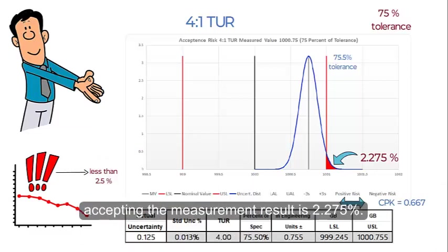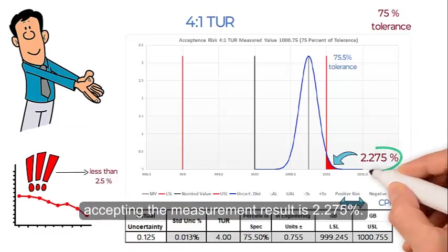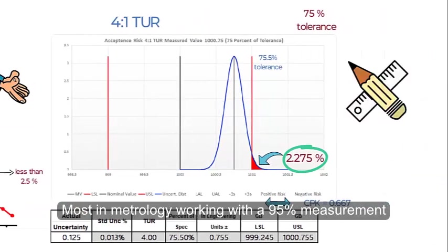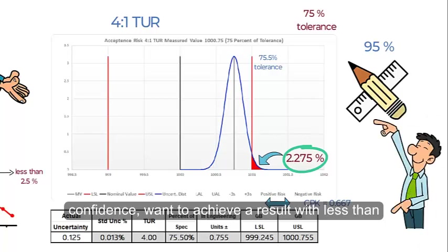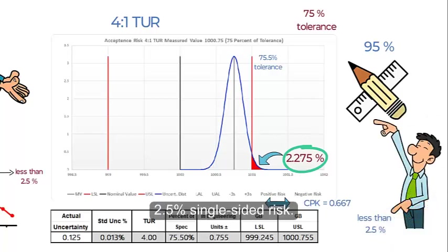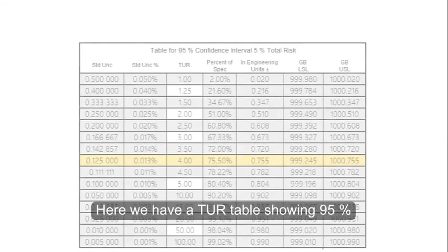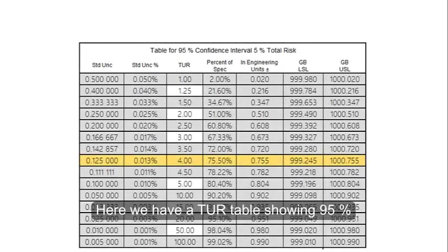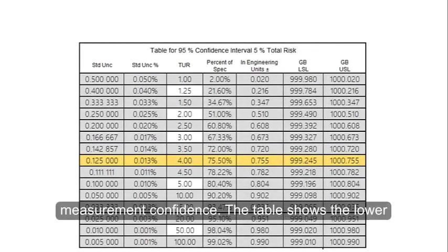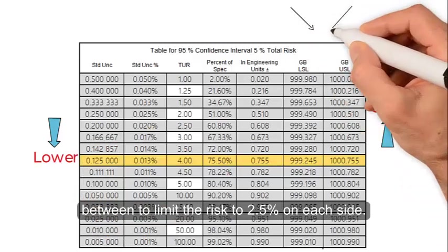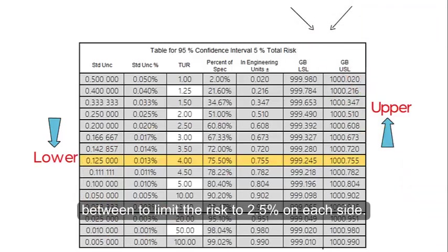The probability of false accepting the measurement result is 2.275 percent. Most in metrology working with 95 percent measurement confidence want to achieve a result with less than 2.5 percent single-sided risk. A TUR table showing 95 percent measurement confidence displays the lower and upper limits where the measured value must fall to limit risk to 2.5 percent on each side.